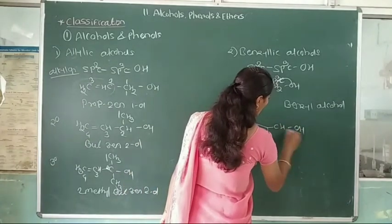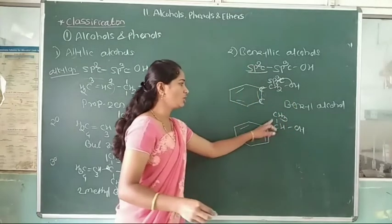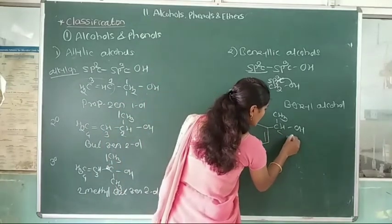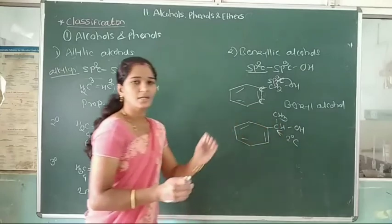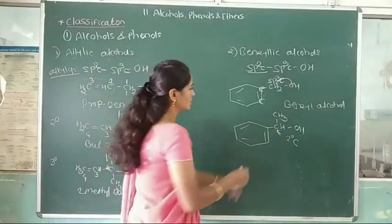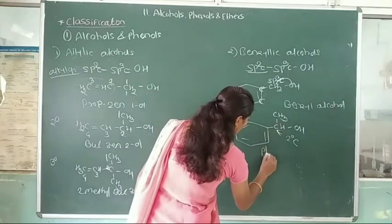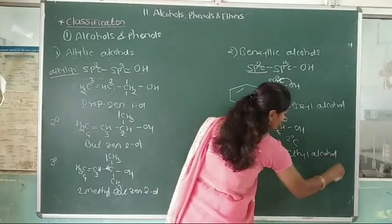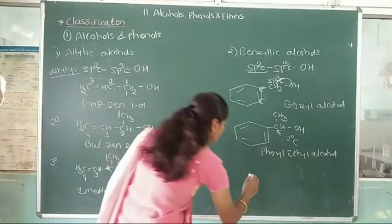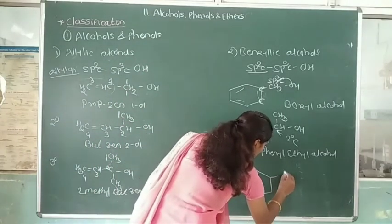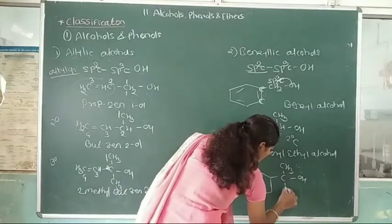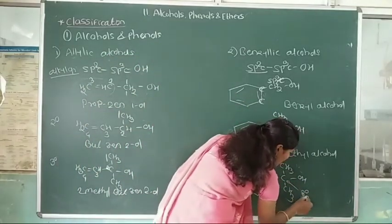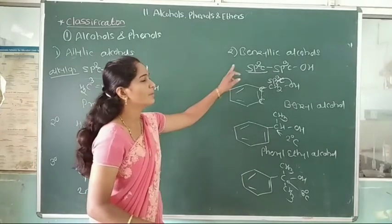Second, benzene ring–CHOH–CH3 — this carbon is a secondary carbon atom, so this is an example of secondary benzylic alcohol, called phenylmethyl (or 1-phenylethan-1-ol). Third, benzene ring–C(CH3)2–OH — this carbon is a tertiary carbon, so this is tertiary benzylic alcohol.